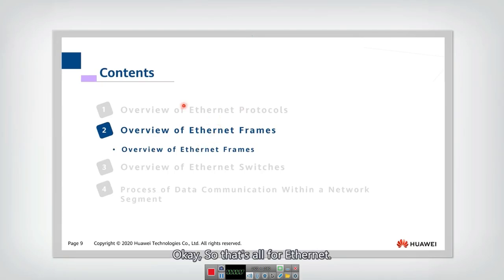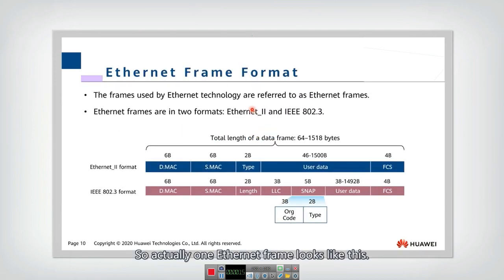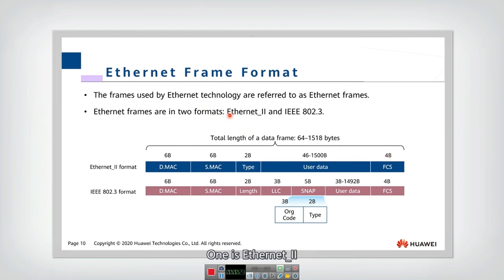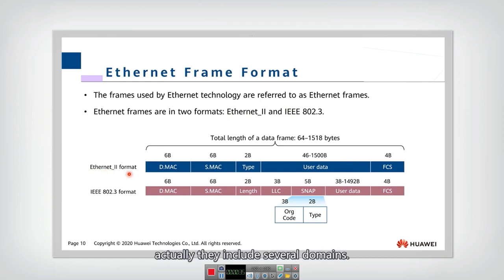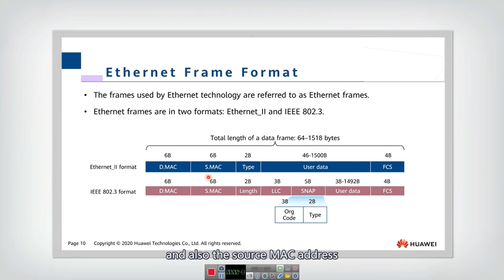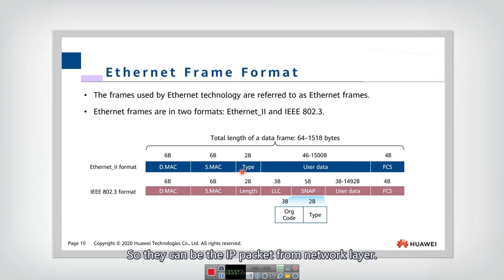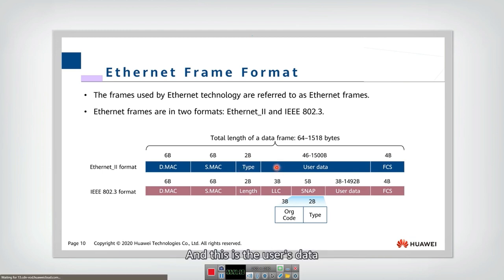That's all for Ethernet. Now we will introduce the Ethernet frames and look at the format of the Ethernet frame. There are two kinds of Ethernet frames: one is Ethernet 2 and another is IEEE 802.3. For Ethernet 2 format, they include several fields: the destination MAC address, the source MAC address, and the type field, which indicates what type of data is included in the payload — for example, IP packets from the network layer or ARP packets from the upper layer.